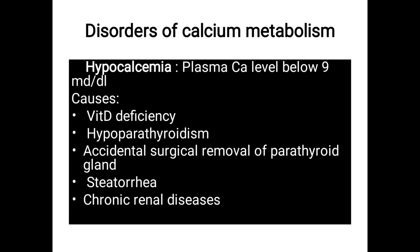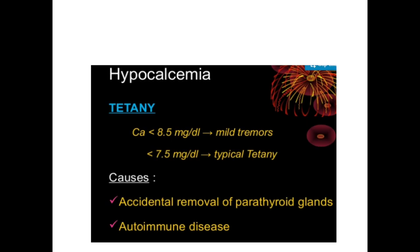Chronic renal disease also causes hypocalcemia because reabsorption of calcium is affected. Hypocalcemic tetany is an important condition — tetany means muscular spasm, stiffness of the muscle, and involuntary control of muscle movement. Normal calcium is 9 to 11 mg/dL; less than 8.5 causes mild tremor, and when calcium is less than 7.5 milligram per dL it is called typical tetany.